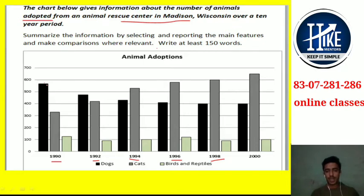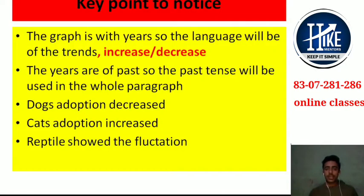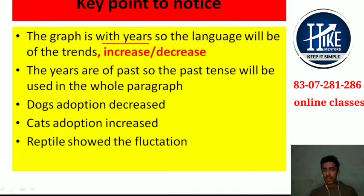Before starting any Task 1, there are some key points to note. First, when a graph with more than one year is given, the language you will use will involve trends — that will be increase and decrease — and for the years, you will use past tense.